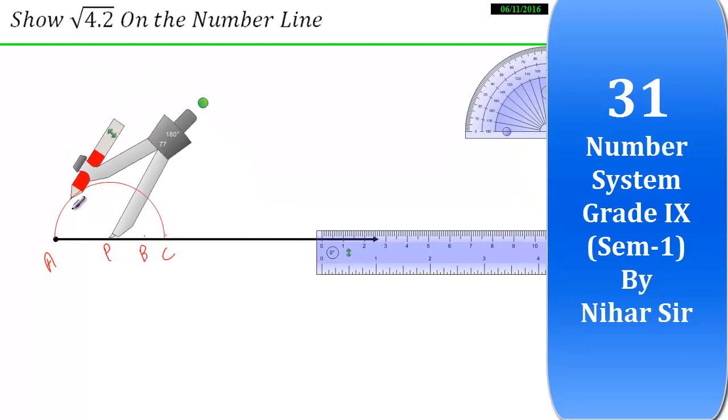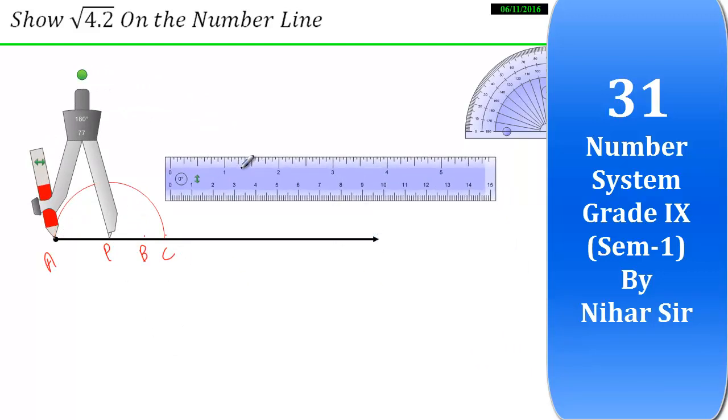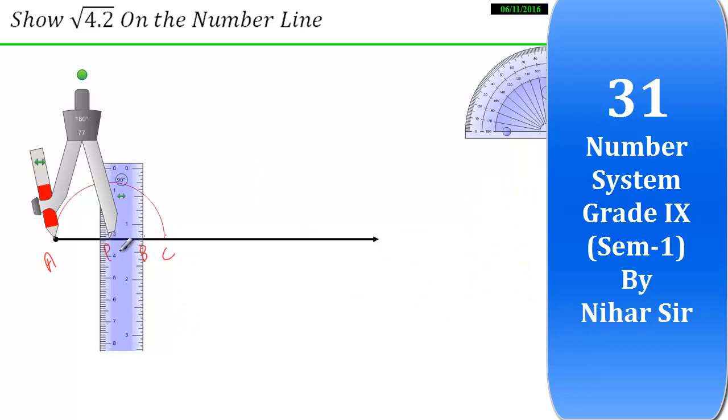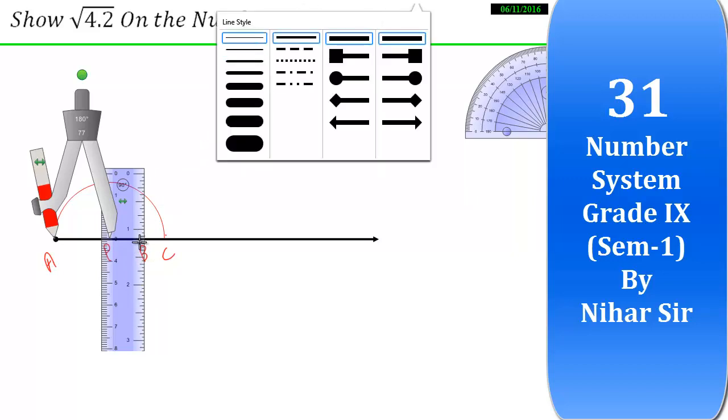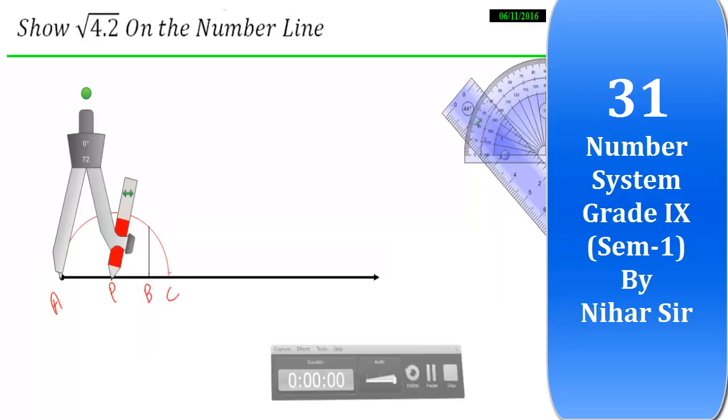Now I will draw a line over here that will touch the semicircle at D. Let me draw the line like this, so it will be better, so it looks good. So it's D over here.